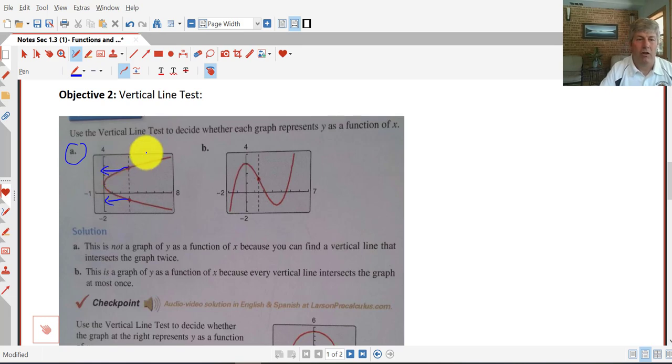So the vertical line test says that if you draw a vertical line through your graph, and you hit the graph more than once, that can't be a function. So A fails the vertical line test. So that is not a function. Whereas B here, we can draw vertical lines. We only hit the graph once. So this passes the vertical line test. So that is indeed a function.